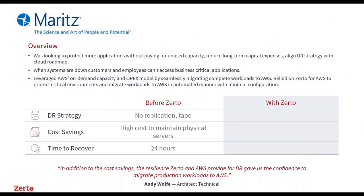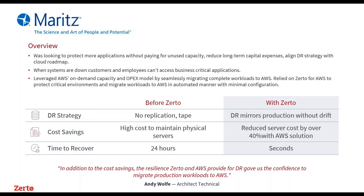Moritz — whose tagline is 'Science and Art, People Potential' — uses Zerto for both DR and migrations, a common theme among customers. They realized they could save significantly by migrating workloads to AWS. Because they'd already done disaster recovery into AWS with Zerto and found it worked seamlessly, they could migrate workloads into AWS in an automated manner with minimal configuration changes. This gave them confidence in the migration process and saved them approximately 40% by using Zerto to migrate into the public cloud.